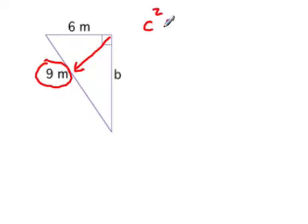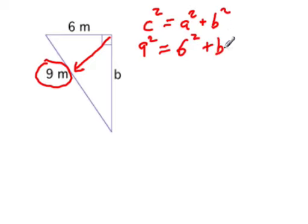So for C squared equals A squared plus B squared, make sure you correctly substitute in for the hypotenuse. So this is going to be 9 squared is equal to, and we can either sub in B for B or A, but we'll do it for B because that would make sense.